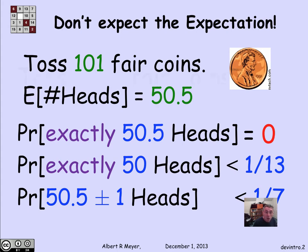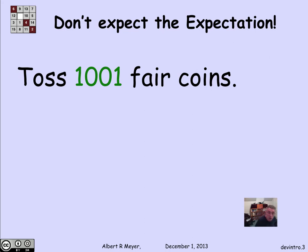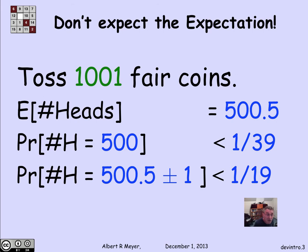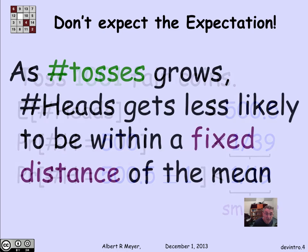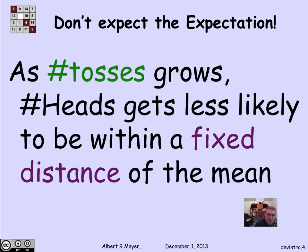Let's flip more coins and see what happens. This time, I'm going to flip 1,001 coins. And again, the expected number of heads is 500 and a half, which I'll never get exactly. The probability of getting exactly 500 heads is 1 in 39th. And the probability of getting within one of the expectation, that is either 500 or 501 heads, is about 1 in 19th. Now, these numbers have gone down. From the previous numbers, remember, it was about 1 in 7th. And we've gone down to 1 in 19th. So we're less likely to be within a fixed distance, within one of the expectation when we flip more coins. So as the number of tosses grows, the number of heads gets less likely to be within any given fixed distance of the mean.